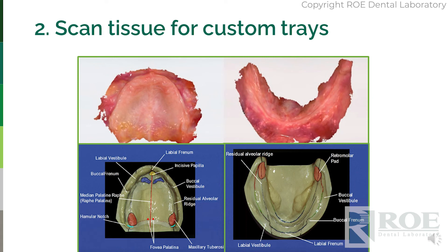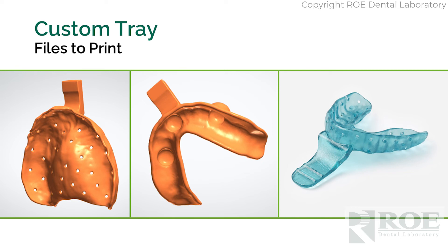Method number two: scanning tissues for custom trays. This is a wonderful entry point. In the past, we've always said you really don't want to start a digital denture from an iOS scanner. But if all we're going to do is fabricate a custom tray or even a bite block — which is even better — we'll offer both options. Again, capture all the land areas; don't leave anything out. We will simply make custom trays that either you can print in your office or we print here at the laboratory and send.